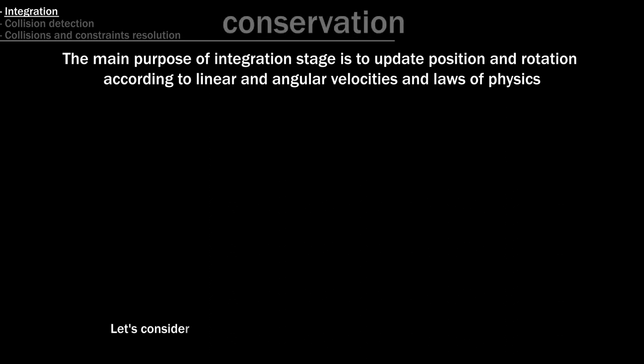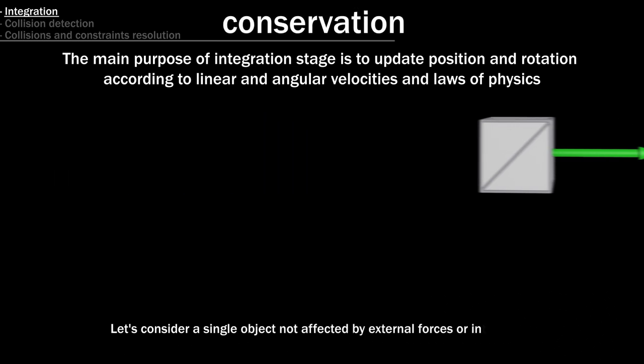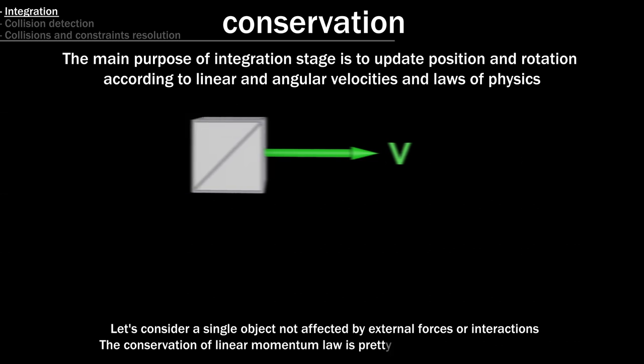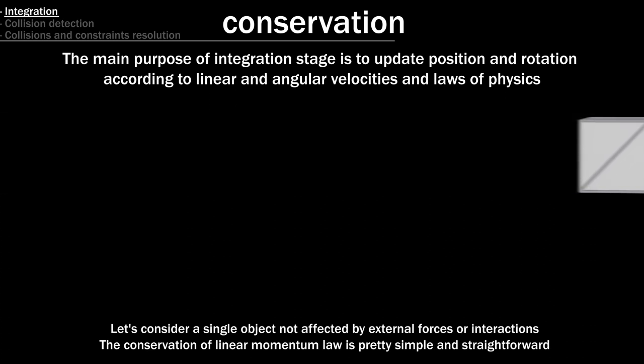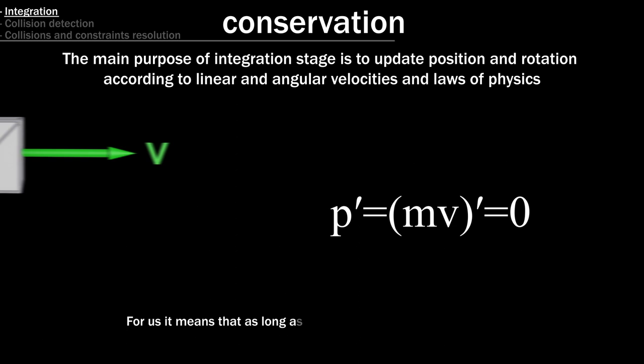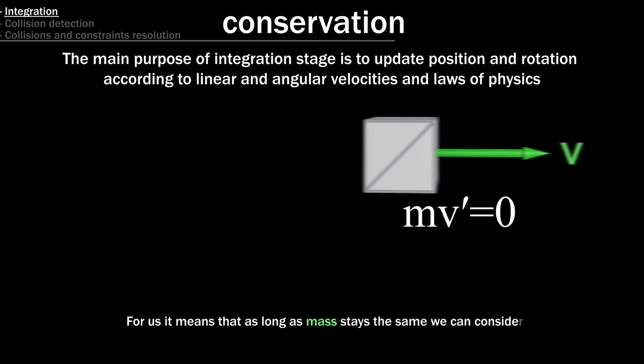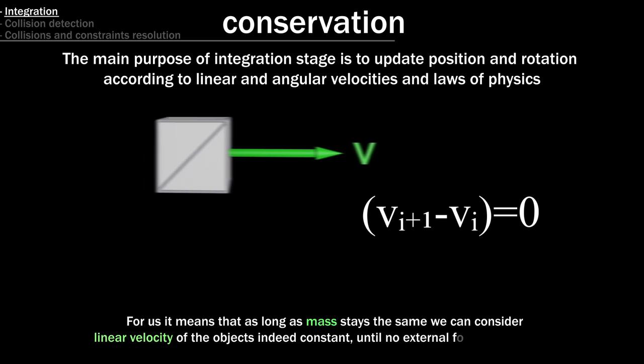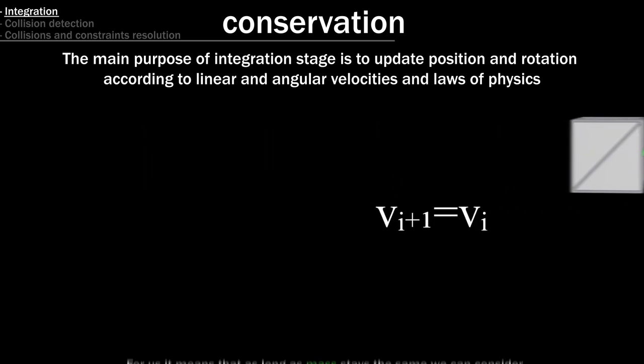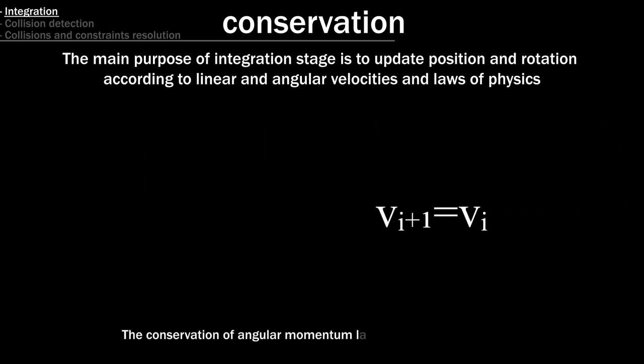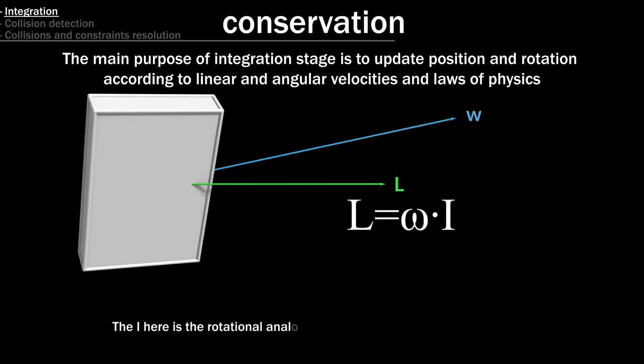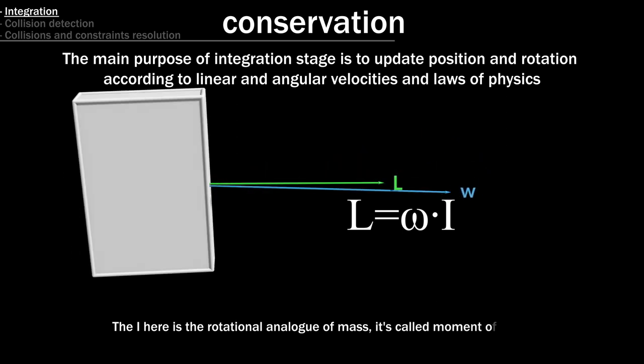Let's consider a single object not affected by external forces or interactions. The conservation of linear momentum law is pretty simple and straightforward. For us it means that as long as mass stays the same we can consider linear velocity of the objects indeed constant, until no external forces are applied. The conservation of angular momentum law is, again, a bit more tricky. The I here is the rotational analog of mass, it's called moment of inertia.